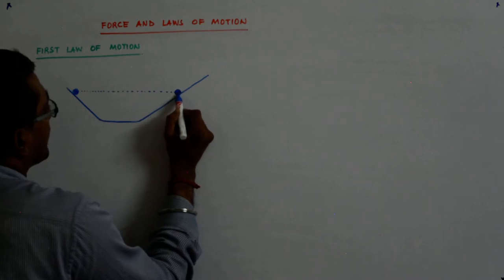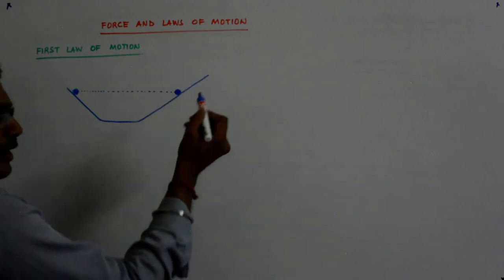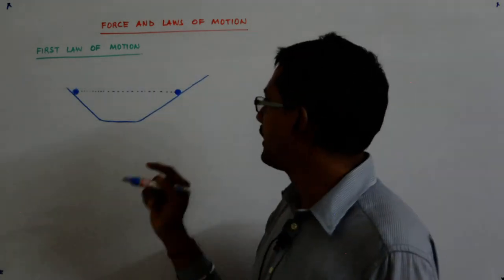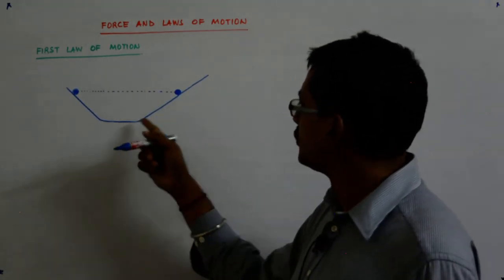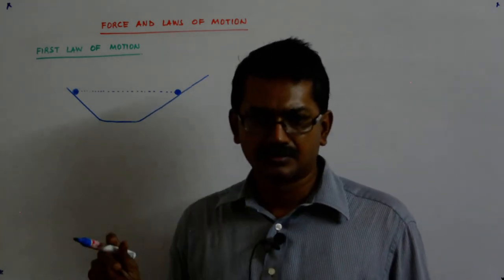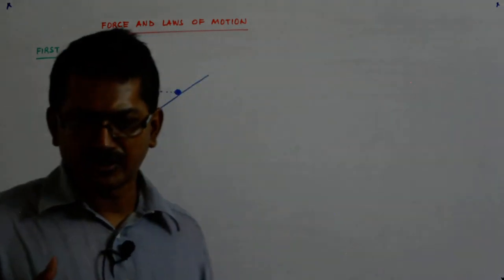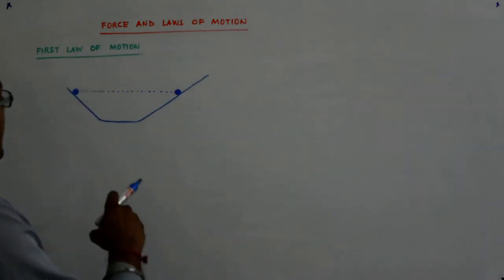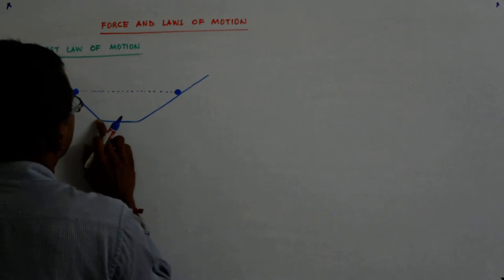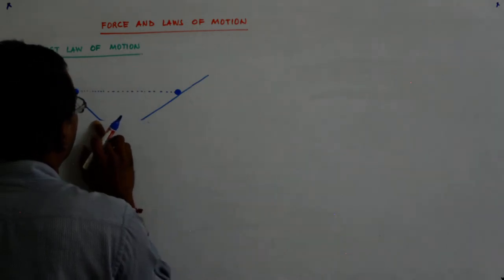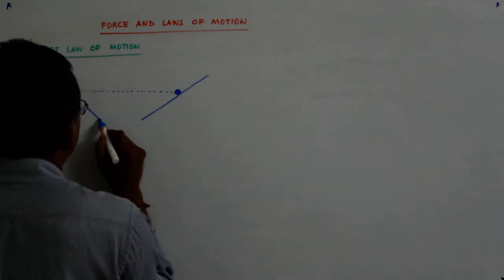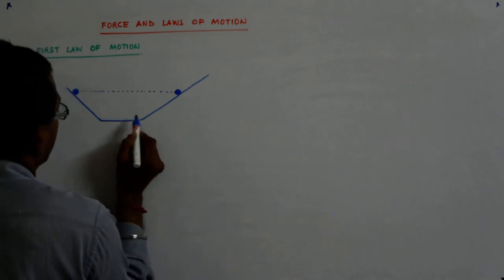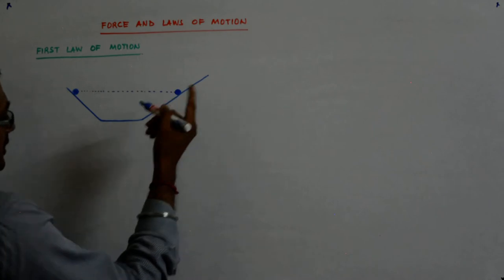First of all it never attained, it never went beyond this and normally it remained short of it. But as he smoothened the path, as he made it smoother and smoother the ball and the surface, he found that its tendency is to attain that height. So the tendency of the ball is to attain that height.